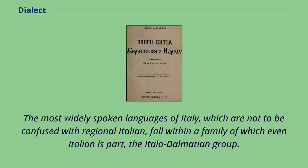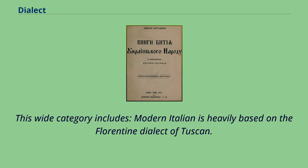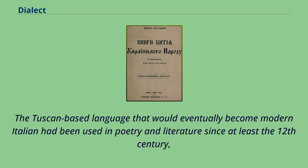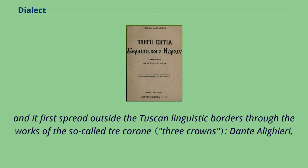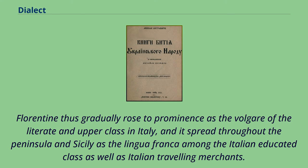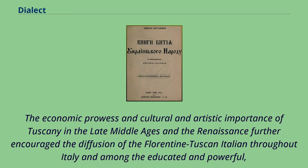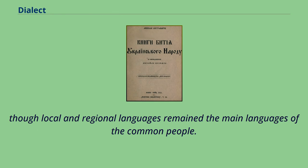The most widely spoken languages of Italy fall within the Italo-Dalmatian group, of which even Italian is a part. Modern Italian is heavily based on the Florentine dialect of Tuscan, which had been used in poetry and literature since at least the 12th century and first spread outside Tuscan linguistic borders through the works of the Trecoroni — Dante Alighieri, Petrarch, and Giovanni Boccaccio. Florentine gradually rose to prominence as the vulgar of the literate and upper class, spreading throughout the peninsula as the lingua franca among the educated and Italian traveling merchants. The economic prowess and cultural importance of Tuscany in the late Middle Ages and the Renaissance further encouraged its diffusion, though local and regional languages remained the main languages of the common people.